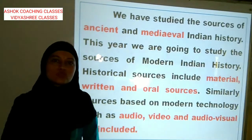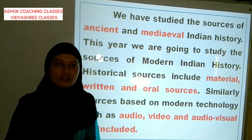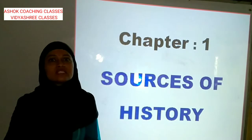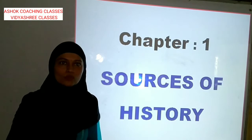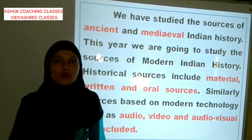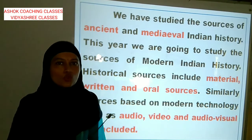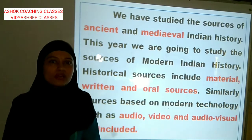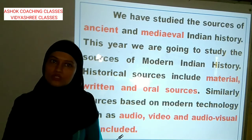Now what do you understand by sources of history? Sources of history yaani wo sari cheezein, wo person ya place, jis ko obtain karke aap history ke baare mein padh sakte ho. Now kitne type of sources hain: material sources hain, written sources hain, and oral sources hain. And abhi modern history mein ek aur source add hua hai, that is audio-visual source.